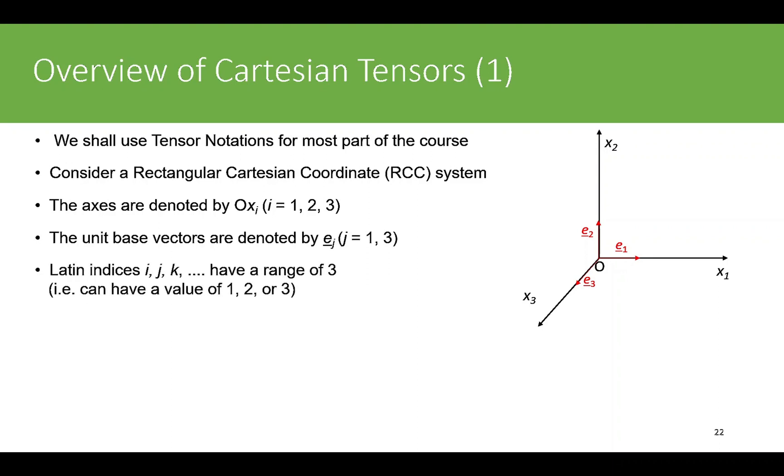Latin indices i, j, k have a range of 3, that is, can have a value of 1, 2, or 3. First-order tensors are written with one index, for example U_j, V_k, and so on, as I explained in the previous part.